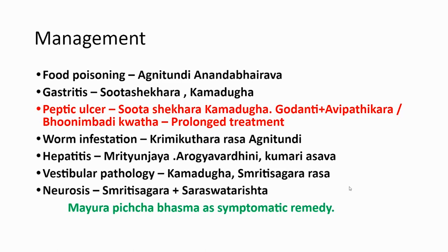For gastritis — where the person has irritation in the stomach, burning sensation, heartburn — the vomiting is characteristic: the moment the person consumes food there will be vomiting and pain in the upper abdomen. My prescription would be Sulekhara and Kamadugha, or occasionally Godanthi, Avipathikara, and Anandabhairava. For peptic ulcer, they need prolonged treatment. Once peptic ulcers are diagnosed, the minimum duration of treatment would be 3 months. The main prescription would be the same — Sulekhara, Kamadugha, and Godanthi Avipathikara, or occasionally with Bhunimbadi Kwatha when the patient would not have much constipation. The only issue is the treatment has to be prolonged.